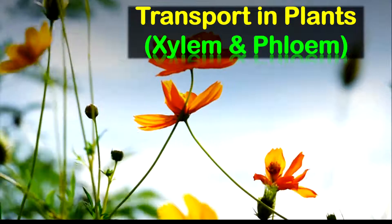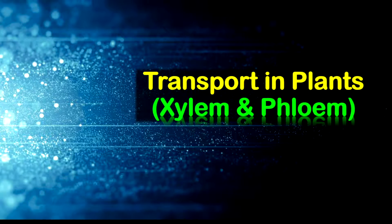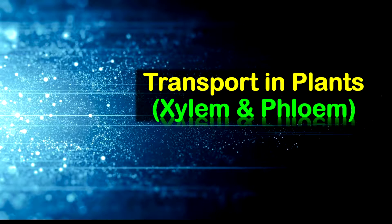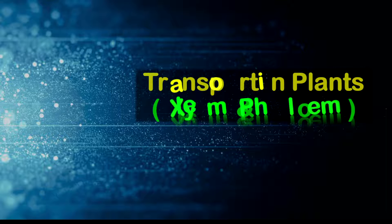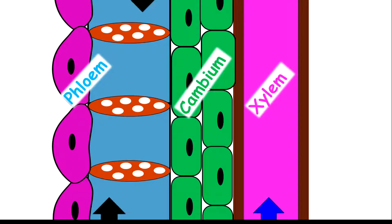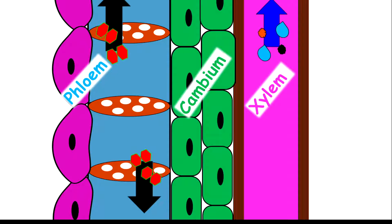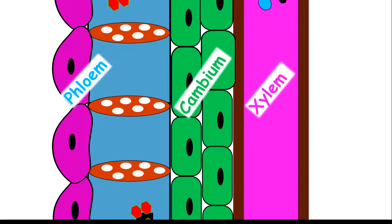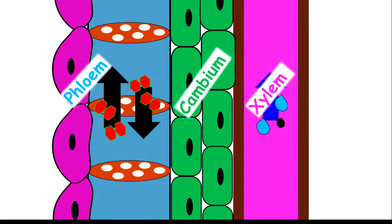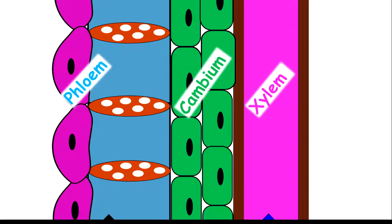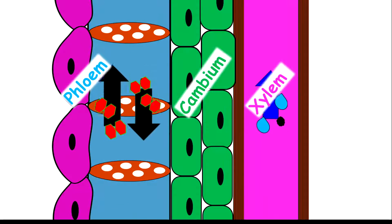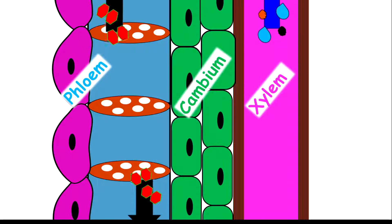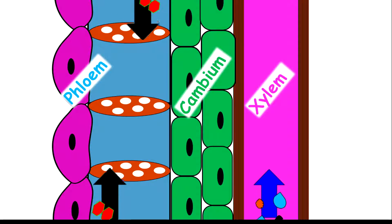These vessels have specific adaptations making them effective in transporting substances throughout the plant. The objectives for today are to look at how substances flow through the plant and their directions. We're also aimed to understand the adaptations of these transporting vessels and how these structures are arranged within a plant stem.